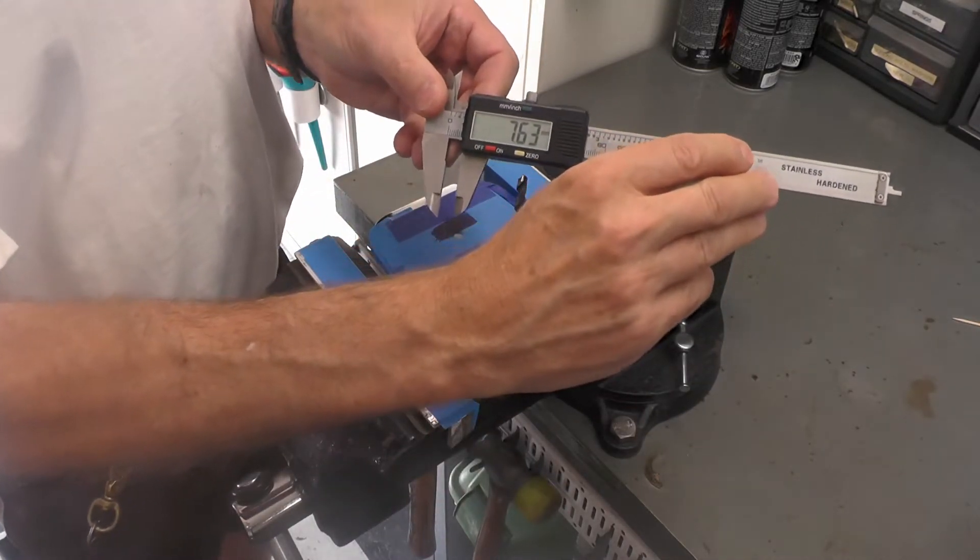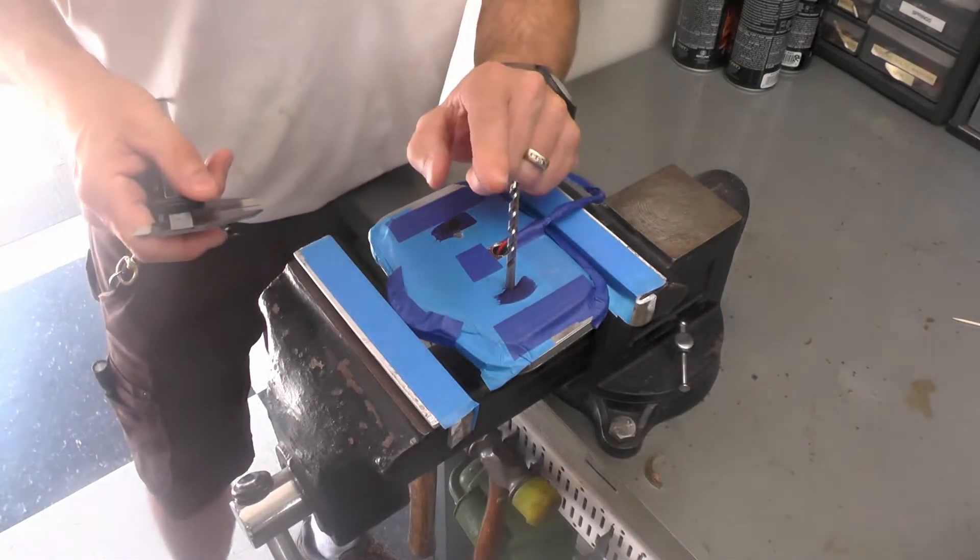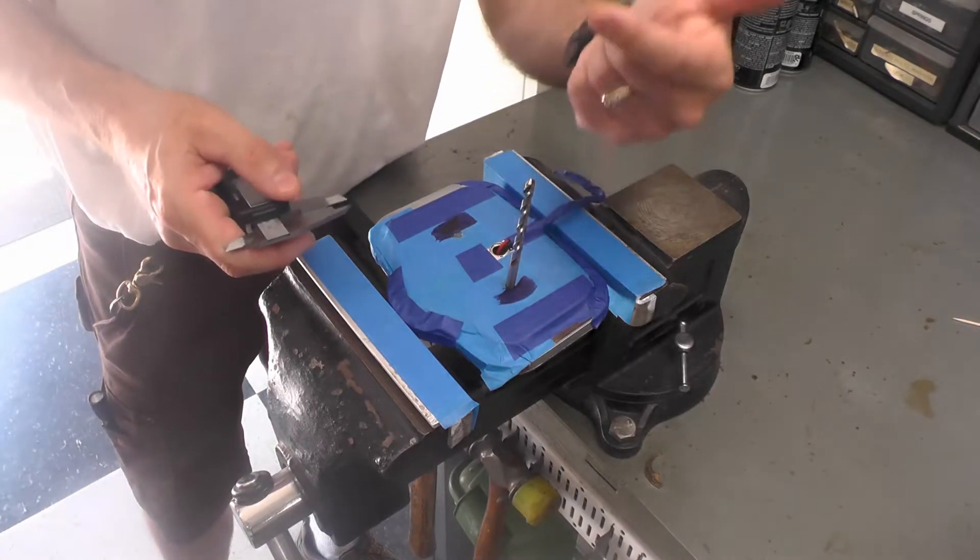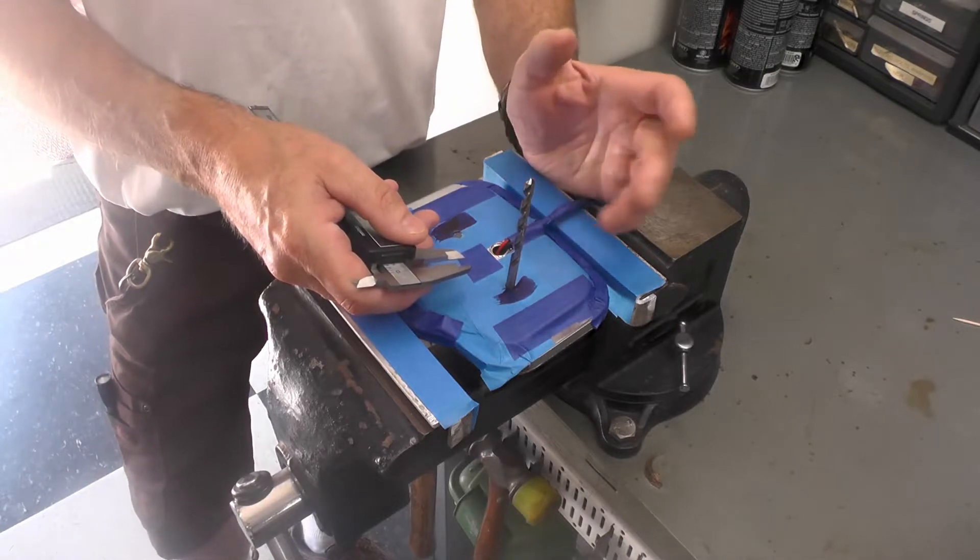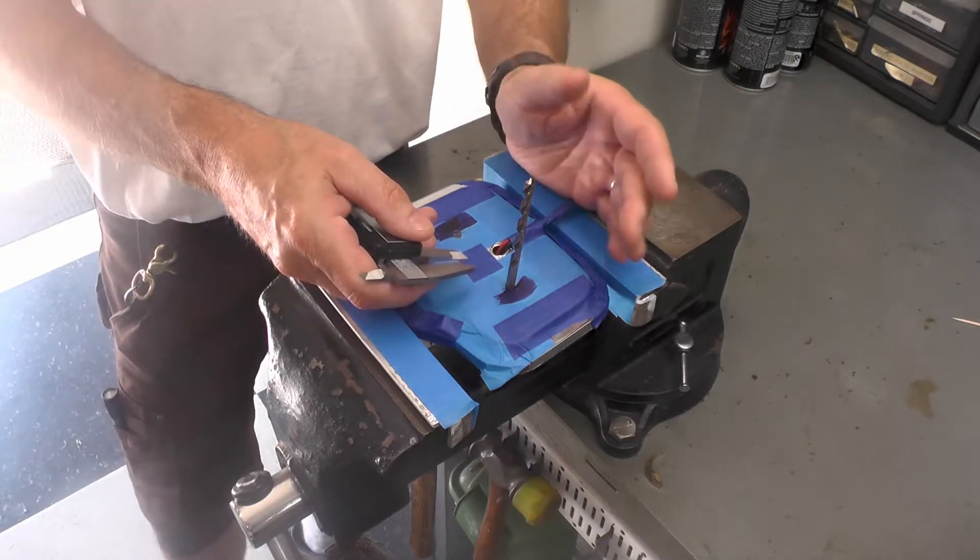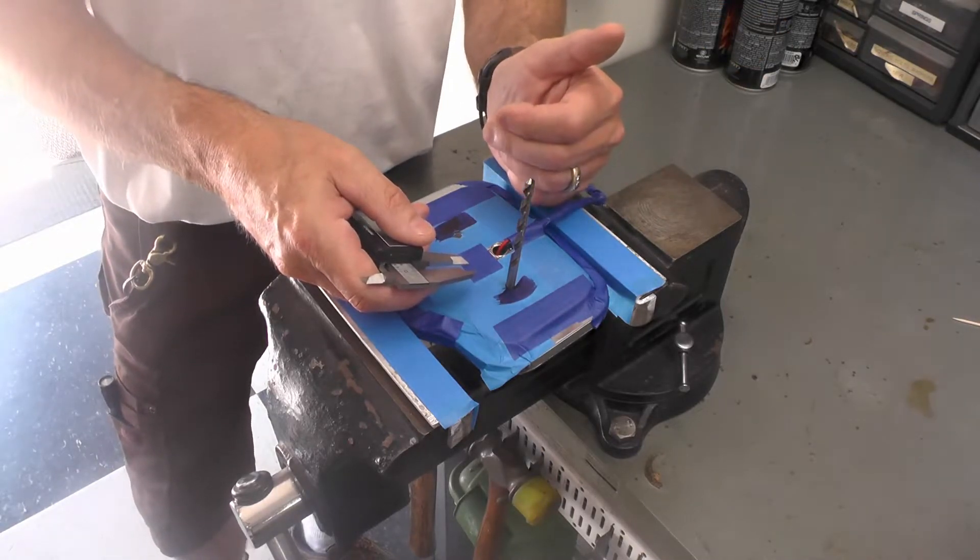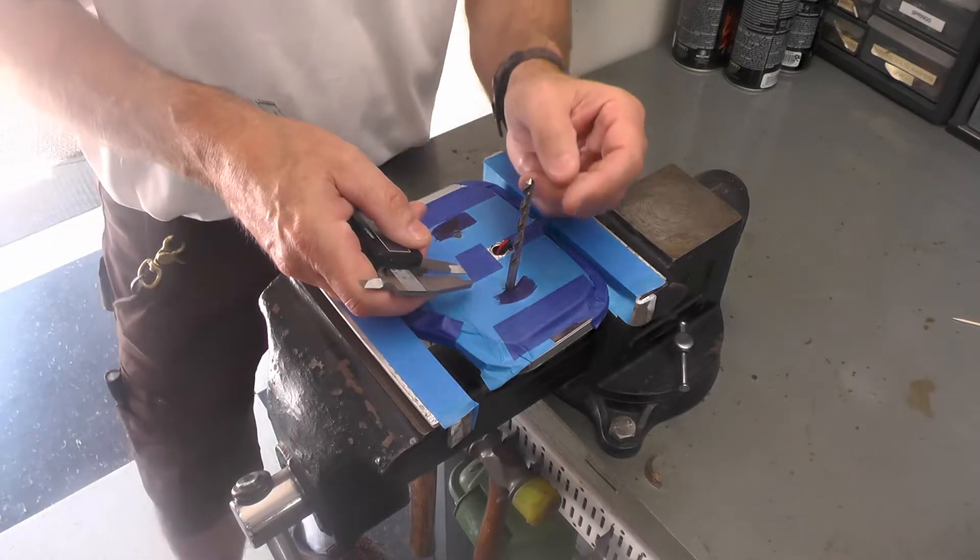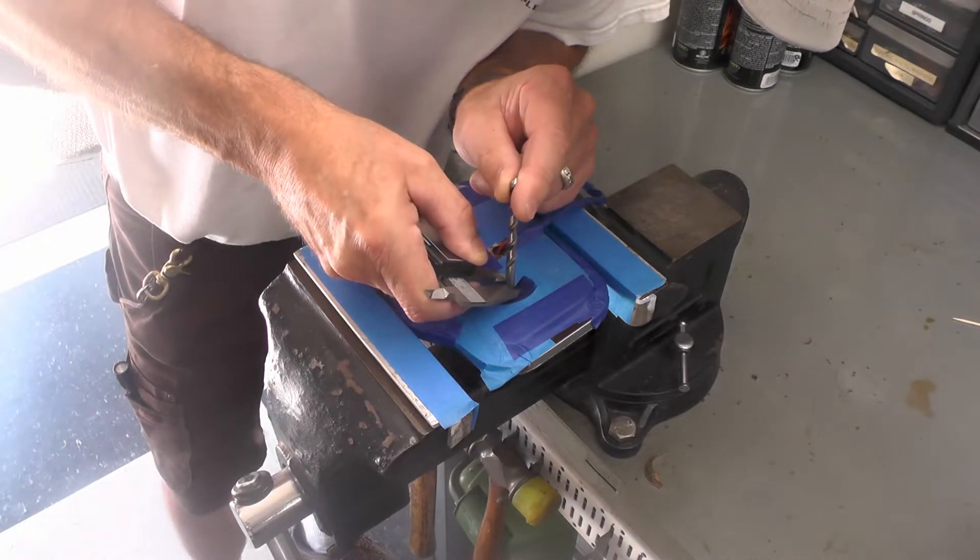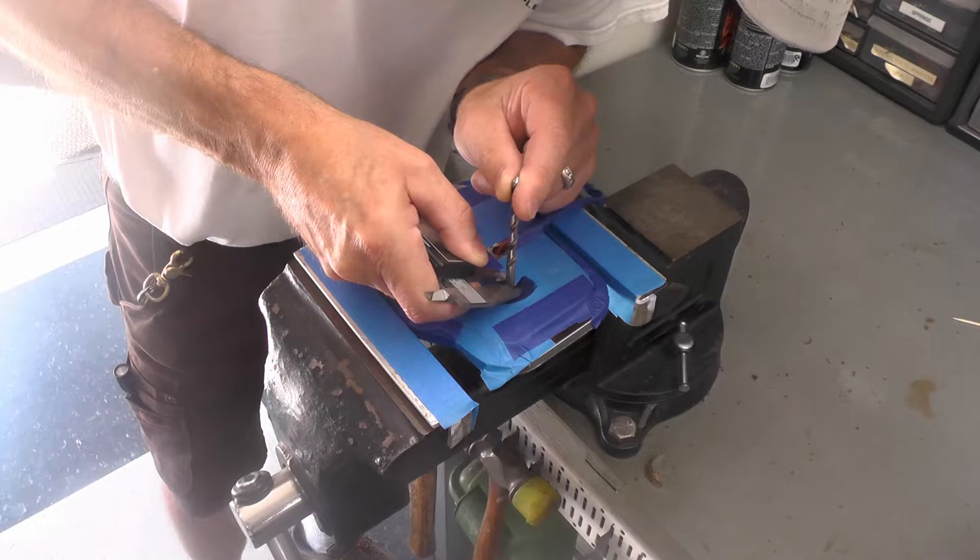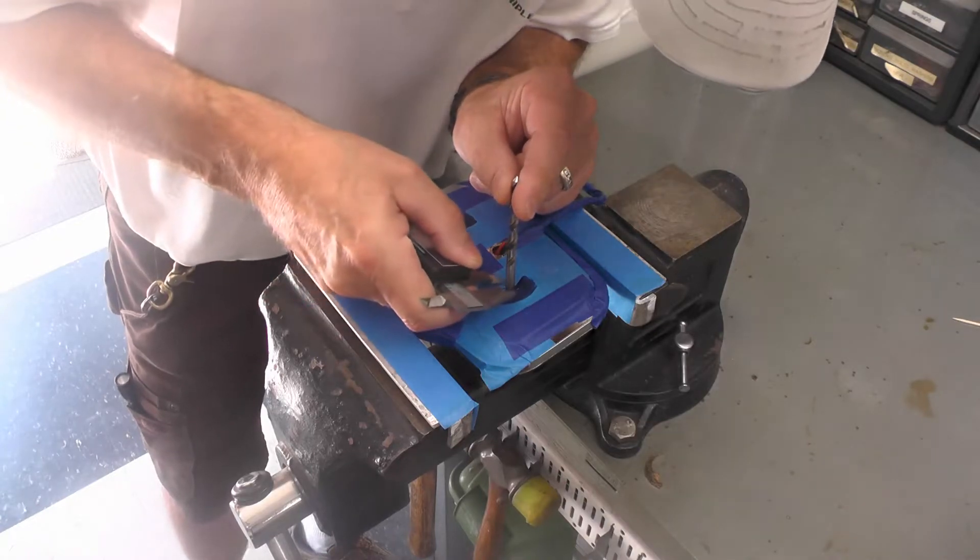A few minutes later the layout dye has dried. I've got my caliper set to 7.63 millimeter and I'm going to hold this drill as vertical as I can. Again, I'm not making parts for the next moon launch, so high precision is not critical here. If I was concerned about that I would set this up in the mill.